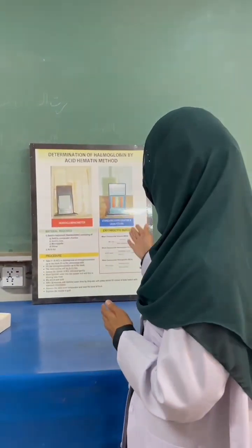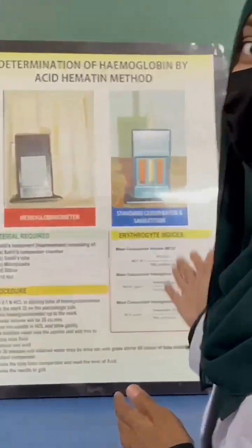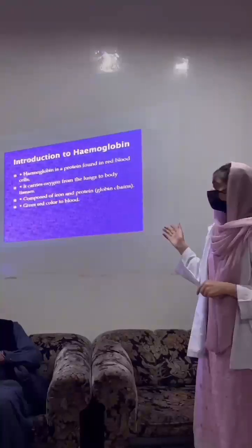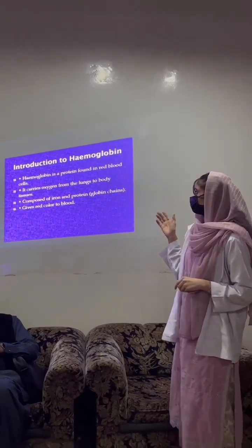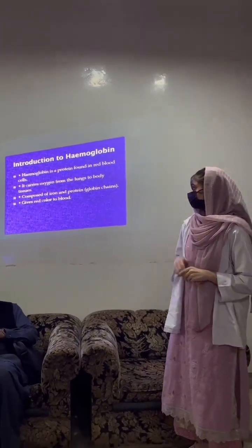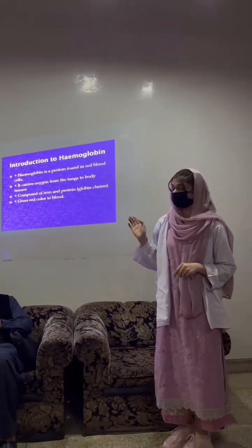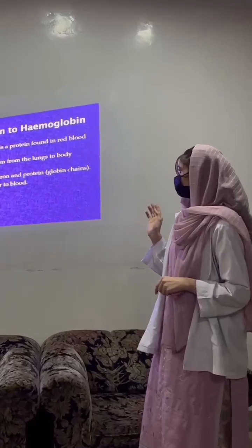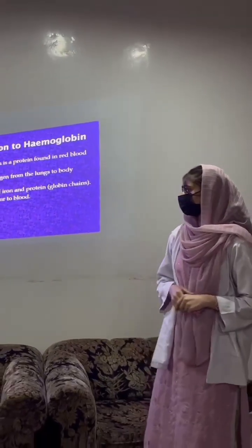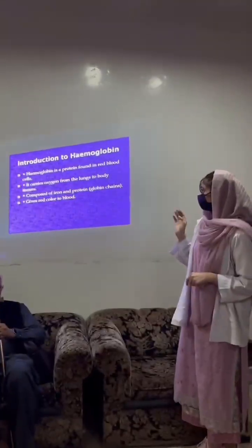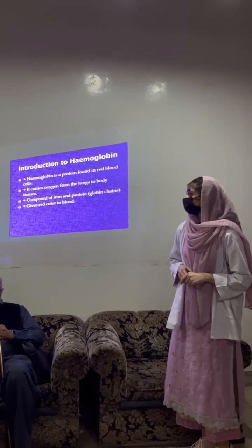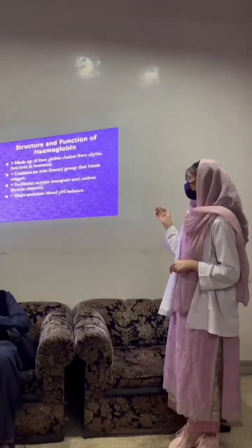Today we are here to determine the quantity of hemoglobin by the acid hematin method given by Sahli. Hemoglobin is a protein found in red blood cells. It carries oxygen from the lungs to the body tissues, and it is composed of iron and protein globin chains. It gives the red color to the blood.